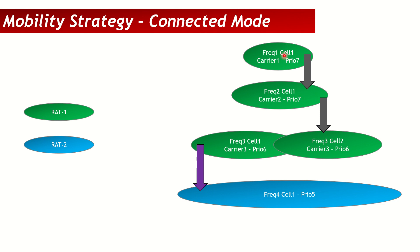Here we have Frequency 1 and Frequency 2 with the same idle mode priority, and Frequency 3 cells with a priority of 6, which is lower. In connected mode, priority doesn't really matter — most connected mode strategies are coverage-based. Priorities come into play mostly in idle mode. This example is kept consistent with the last session, so reviewing that session first will help.